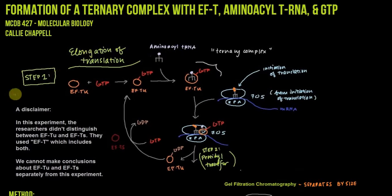The first thing that happens with elongation of translation is coupling between EF-TU and GTP. Then aminoacyl tRNA comes into the complex to form this ternary complex. This is the complex that we're interested in, wondering if it actually forms using this experiment. So the ternary complex includes GTP, aminoacyl tRNA, and EF-T, specifically EF-TU. After that, this associates with the 70S ribosomal complex.